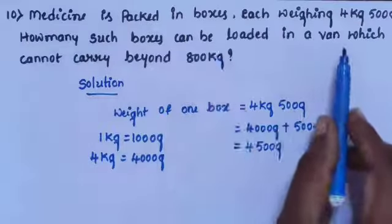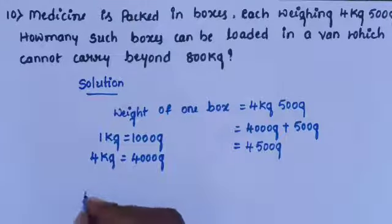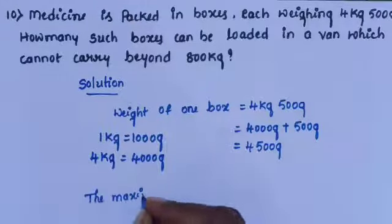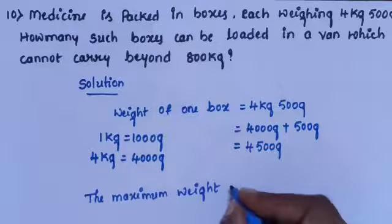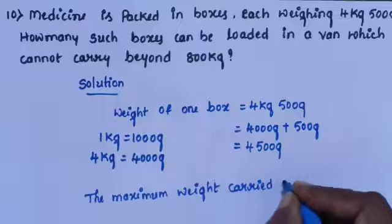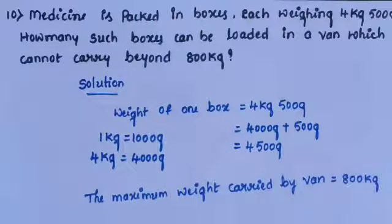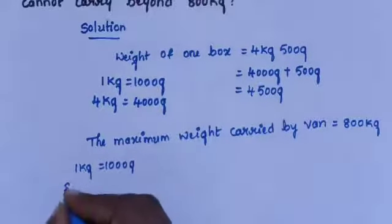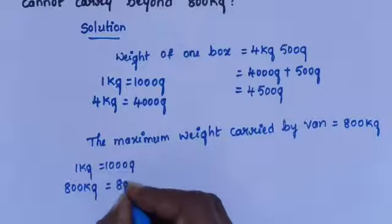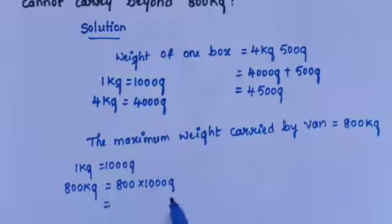How many such boxes can be loaded in a van which cannot carry more than 800 kilogram? The maximum weight carried by the van is 800 kilogram. Since 1 kilogram is equal to 1000 gram, 800 kilogram is equal to 800 multiplied by 1000 gram.